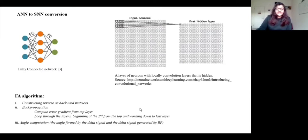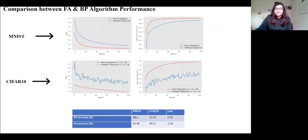So basically, in the backpropagation, we can compute the error of the gradient from the top layer and then we can just move through the layers from the beginning at the second from the top down to the last layer. And that is the angle computation of the angle formed by the delta signal and the delta signal generated by the BP. So basically we're comparing how exactly the BP is working and then we're creating the feedback alignment. I have explained everything in the theory. In the paper, you can just read that one because it's very hard to explain in such a short span.